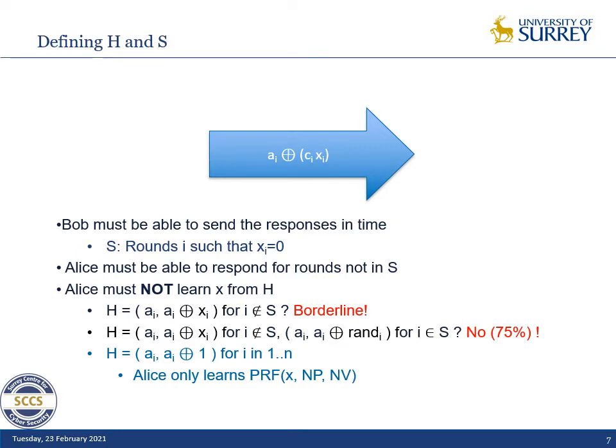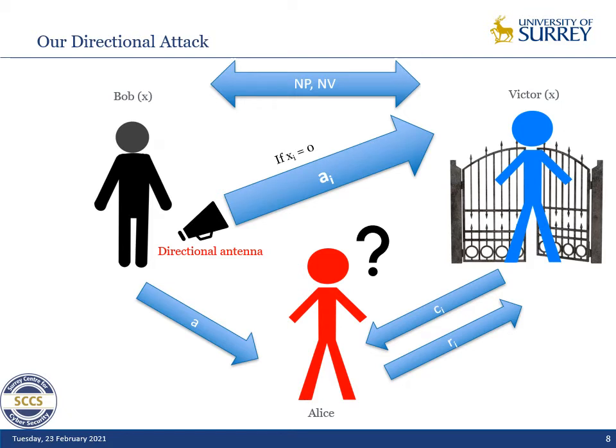Our chosen solution is to give Alice Ai and Ai XOR 1 — the complement of Ai — for all rounds. That way Alice only learns Ai, or the vector A, which is the PRF keyed with X of NP and NV. We assume this gives nothing about the key.